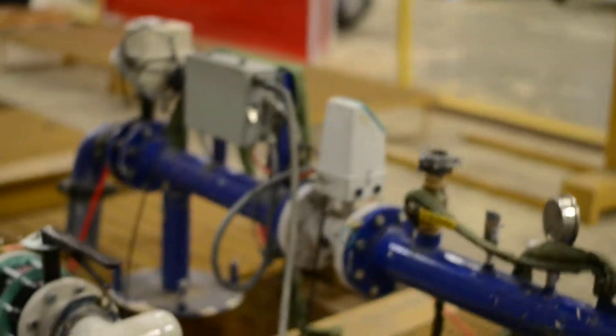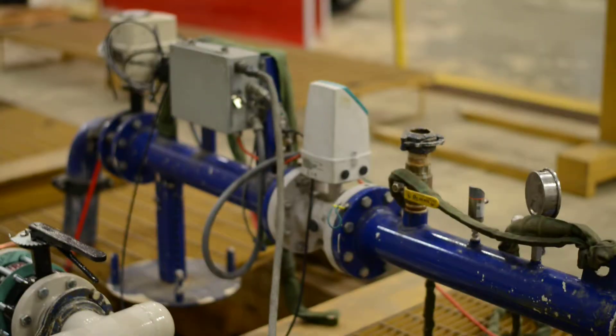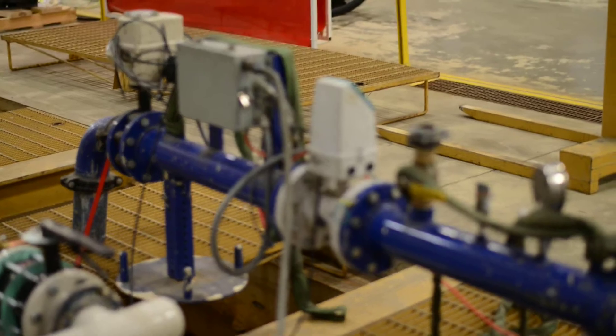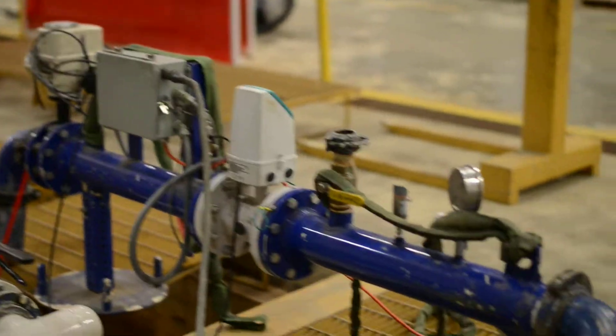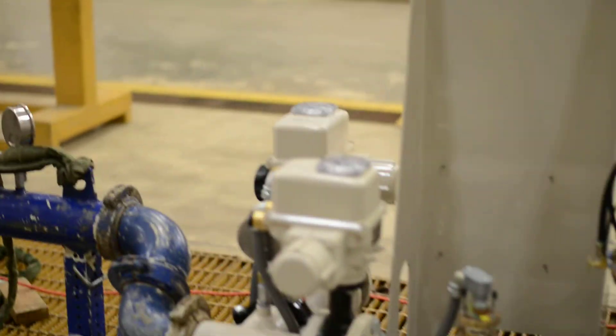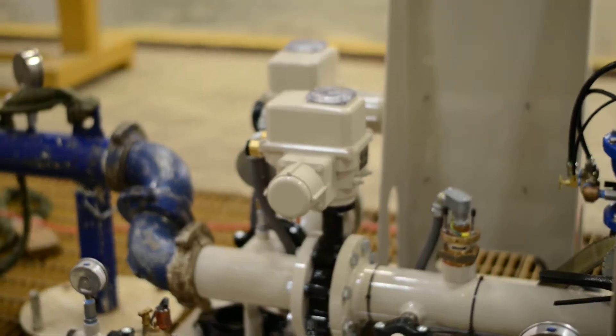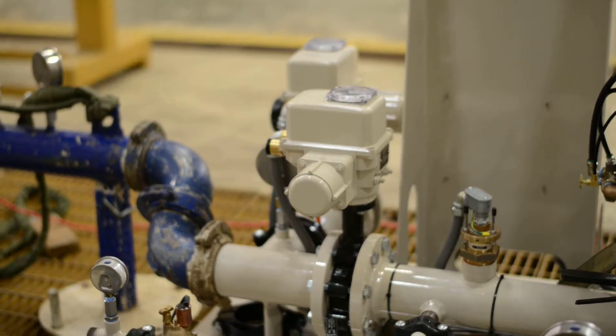What about the EBV valve? Any adjustments on that? No, the EBVs—all we do is make sure that they open and close when they're supposed to. There's really no adjusting on this part. If it's on a vertical turbine station, it's a little different story.